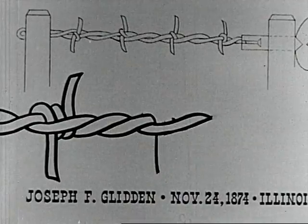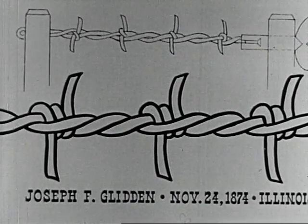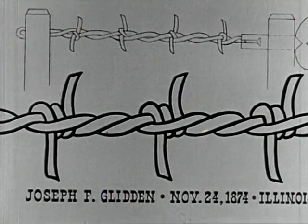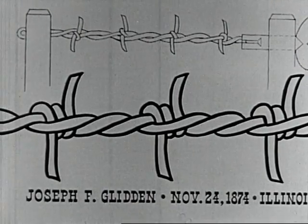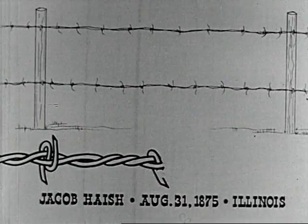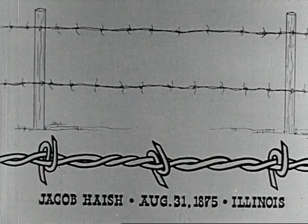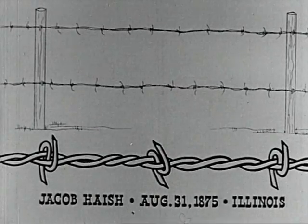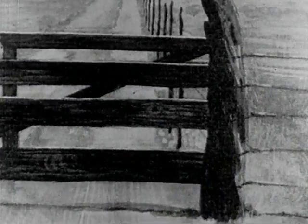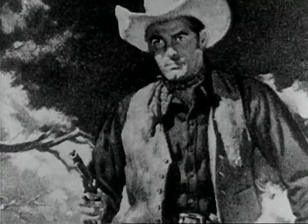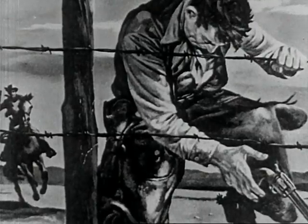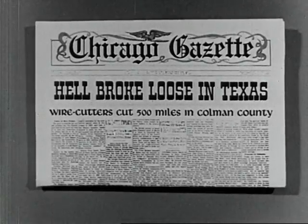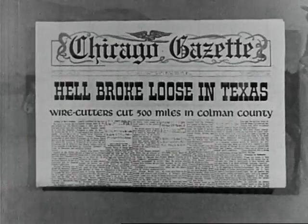In 1874, Joseph Farwell Glidden, a 60-year-old farmer, was granted a patent for a barbed fence wire that worked. The following year, Jacob Haish received a patent for his improved S-barbed steel fence wire. Both methods were practical and inexpensive. The West got its fencing. But the new fences blocked off the cattle trails to the railroads. And there were some who resisted the changes on the plains brought about by barbed wire. Some fenced off water holes, forcing others to become fence cutters.